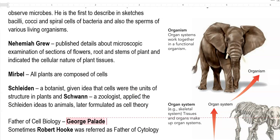The next one is Mirbel. Mirbel also supported the findings of Nehemiah Grew — that all plants are composed of cells.